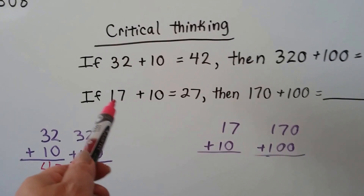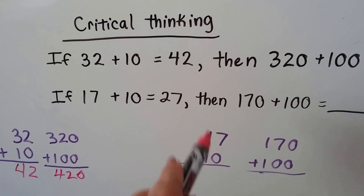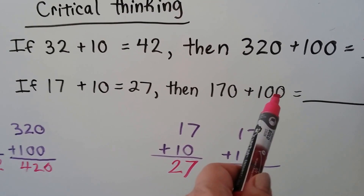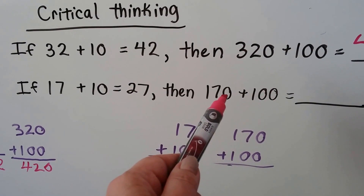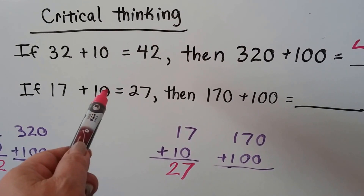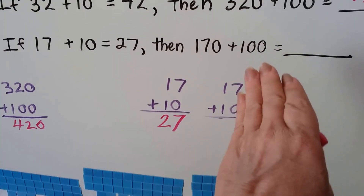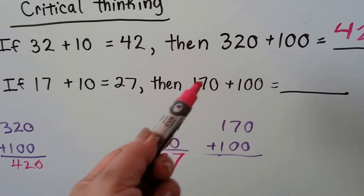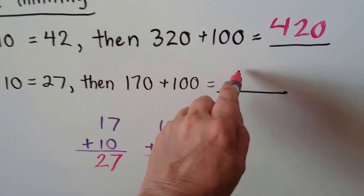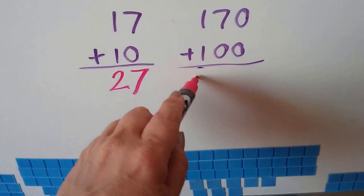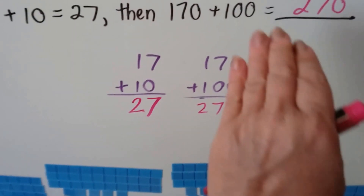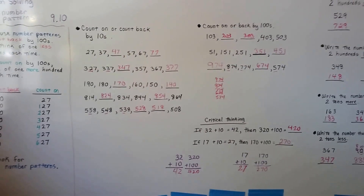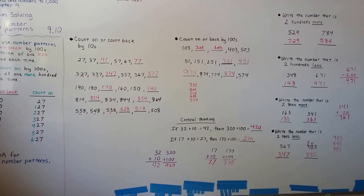Now 17 plus 10 equals 27 — we're just adding one ten. Then 170 plus 100: a zero is added to the end of each number, making them look like the identical problem with zeros at the end. So the sum is just 27 with a zero added at the end — 270. We have a two in the hundreds place, seven in the tens place, zero in the ones place. Practice counting on or counting back by hundreds or tens and see how far you can go without making a mistake.